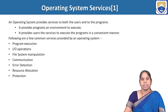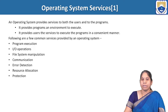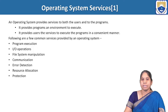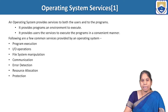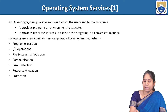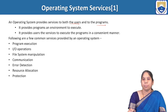Let us see the different services provided by the operating system. In last sessions we already came to know what operating system means, what are the different components of the computer system, different evaluations of the operating system, and what are the different popular types of operating systems used in the current world. The operating system provides services to both users and programs, and these services are categorized as two kinds: user perspective services and system perspective services.